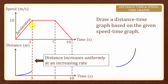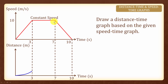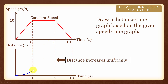Now, for the next 4 seconds, we have a constant speed, and this means that the distance is increasing proportionally as time increases. Therefore, we will have an upward sloping straight line.